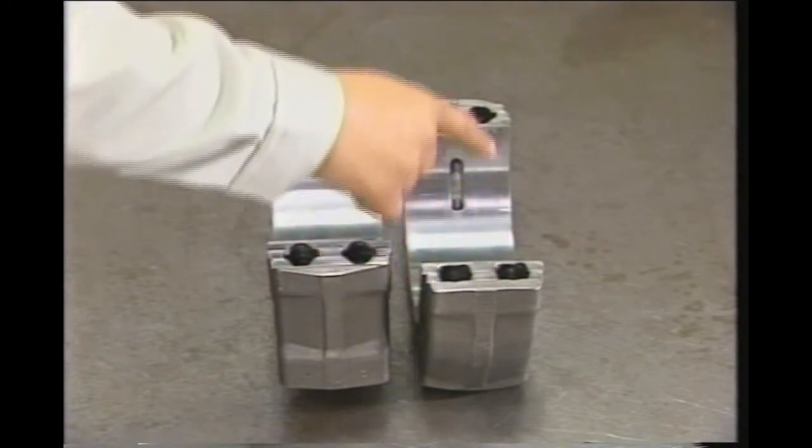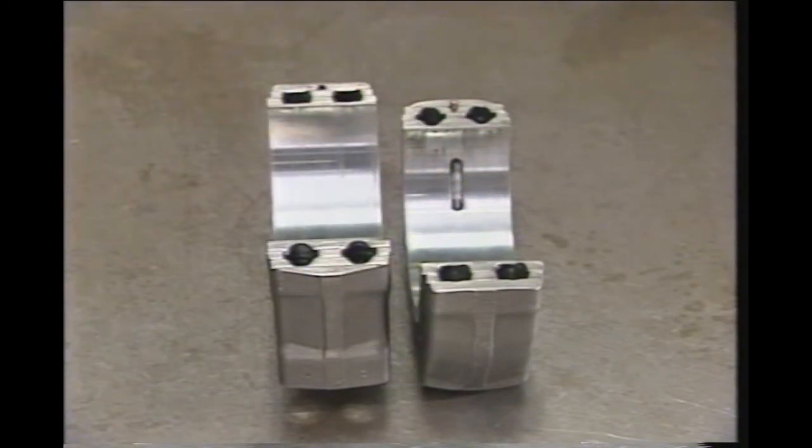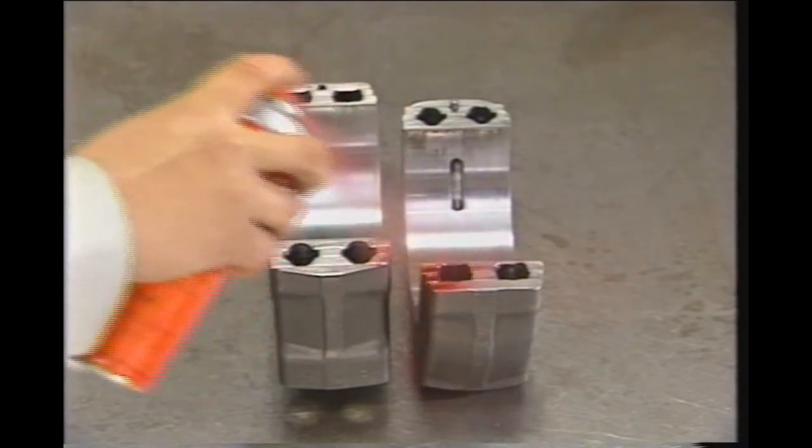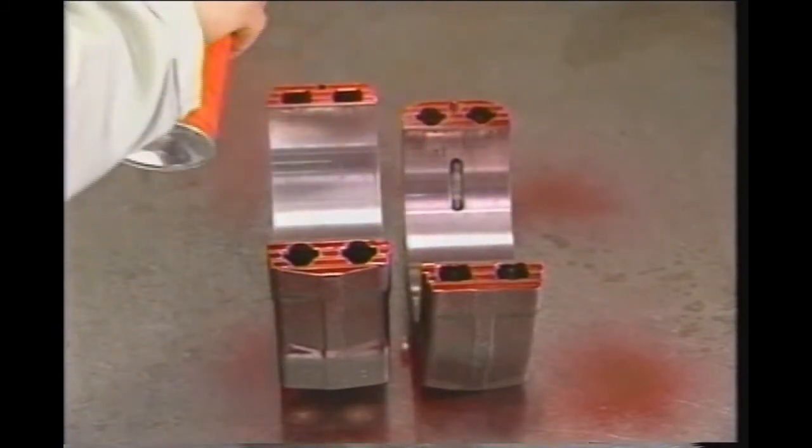Check for damage or fretting on the serrated joining surface and rod part. Perform a color check to check for cracks on the serrated surface.